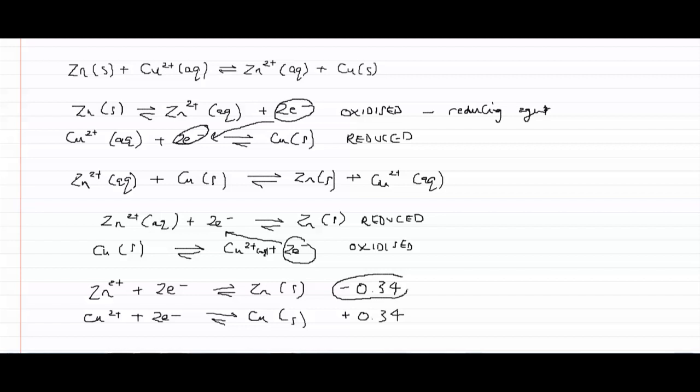The zinc has the most negative reduction potential. So when it's in reaction with copper, the zinc is more likely to reduce the copper, rather than the copper reducing the zinc.